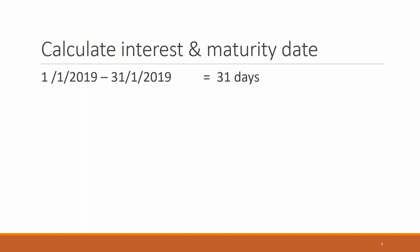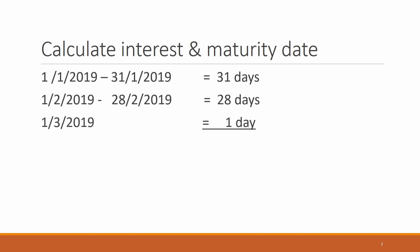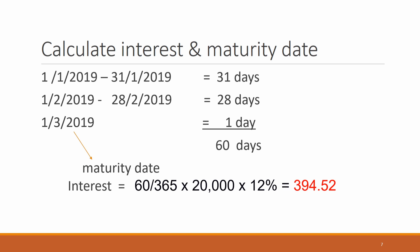Now, how to calculate the interest and maturity date. Starting from 1st January to 31st January 2019: 31 days. Then 1st February to 28th February 2019: 28 days. And 1st March 2019: 1 day. The total is 60 days, so the maturity date is 1st March 2019. Interest is calculated as: RM20,000 × 12% × (60 ÷ 365) = RM394.52.